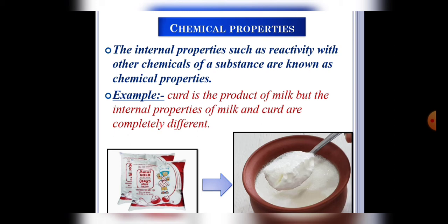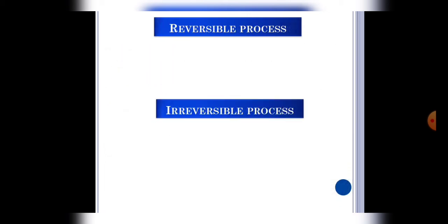Now students, we talked about different changes like physical and chemical changes, but there may be some changes which are temporary and permanent, which we call reversible and irreversible change. So reversible process is a process in which a change can be reversed.